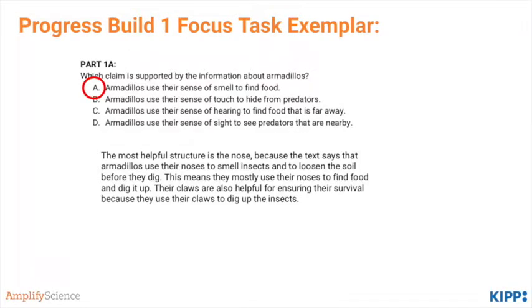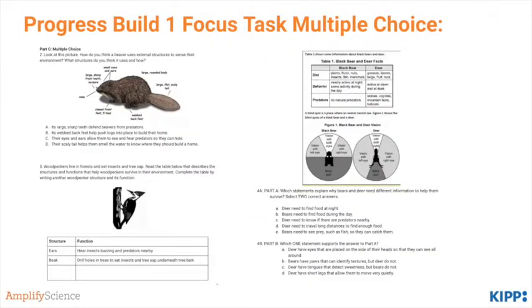For the first part you should have selected A — armadillos use their sense of smell to find food. That's the only sense mentioned in the reading itself. Go ahead and complete the multiple choice questions on the next part of the Focus Task, and then check back here for the answers. These are the answers you should have gotten — go ahead and check them now.